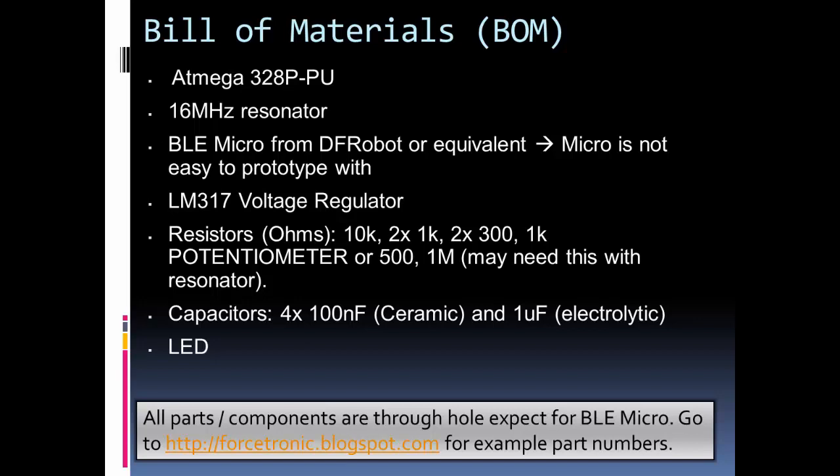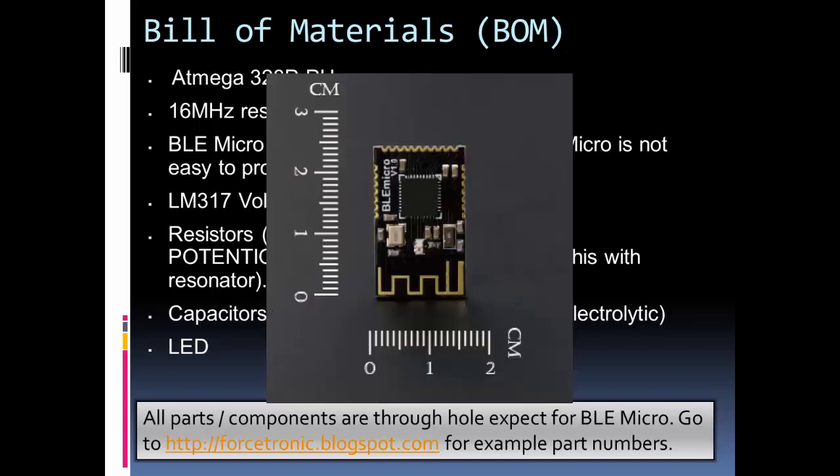One other thing I want to mention is the BLE chip, the BLE micro, is going to be the only thing that's not through-hole. This whole design I want to do through-hole, so it's easy for you to solder and put parts on or take parts off. It's just easier to work with for hobbyists. The only exception will be the BLE micro. That's not going to be through-hole. If you order just the micro, it's not very easy to prototype unless you have a PCB board that you made for it. I will probably link that in part two if you want to access it, but you can get other iterations of the BLE micro that are better for prototyping.